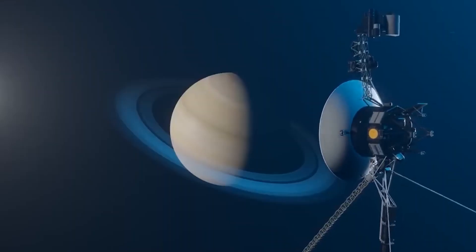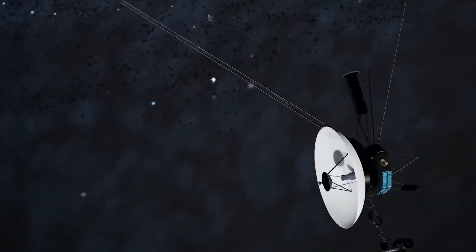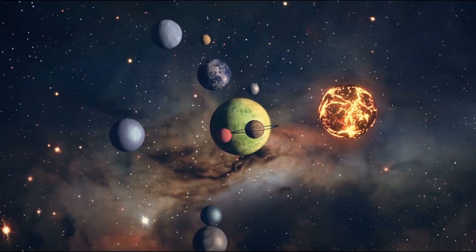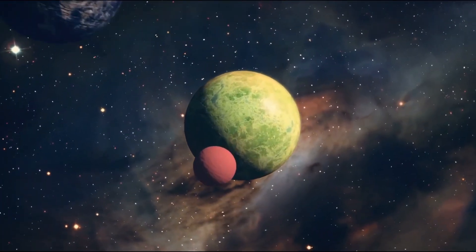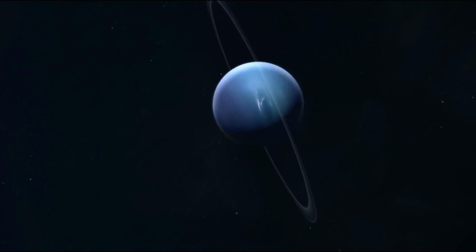Voyager 2 in particular was the first spacecraft to approach Uranus in 1986 and Neptune in 1989, becoming the only probe that visited those planets, surprising scientists with astonishing findings in previously unexplored territories.